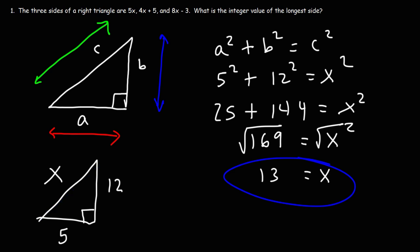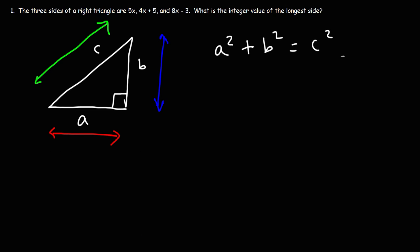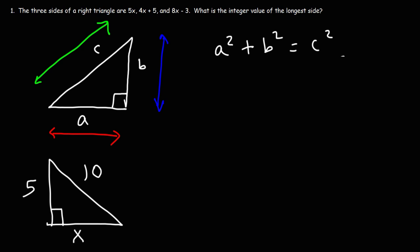Now let's try a harder example. We're going to have another right triangle where the hypotenuse is 10 units long and one of the legs is 5. You want to find the missing side length. What is the value of X in this example? Feel free to pause the video and try this problem.